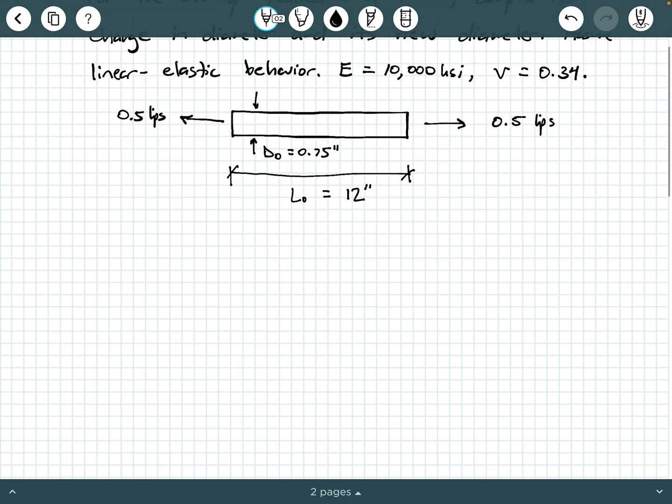We have this axially loaded rod being loaded in tension. You can tell by the forces on either side of the rod pulling on it with a magnitude of 0.5 kips, which is 500 pounds. The original length of the rod is 12 inches and its original diameter is 0.75 inches.